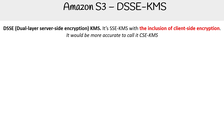Let's talk about DSSE KMS, which is dual layer server side encryption KMS. It's basically SSE KMS with the inclusion of client side encryption. I figured it would make more sense to call this client side encryption KMS, but they don't call it that because other cloud service providers use the term dual layer. So Amazon is following suit here. The reason why that doesn't make sense is that it's not encrypting twice server side, because one's happening client side and one's happening server side, but whatever, it's called dual layer server side.